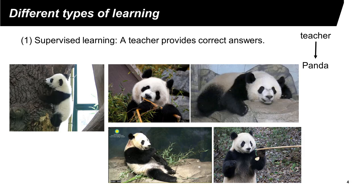The learner may also discover additional information, such as the pandas seeming to be associated with certain types of plants — four of the five examples show leaves. Next time, if a teacher shows a new photograph, the learner may say this is a panda or this is not a panda. The teacher will respond by saying yes, you are correct, or no, you have made a mistake. This is called supervised learning.